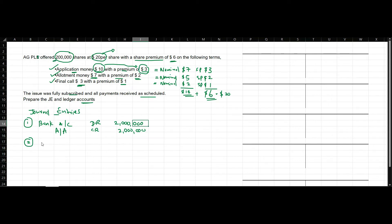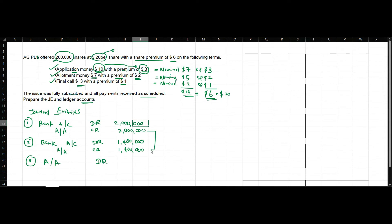Allotment money received is $7, so $7 times 200,000 shares equals $1.4 million. The bank account is debited with $1.4 million and the application and allotment account is credited with $1.4 million. At the time of allotting the shares, you must transfer the money received to the ordinary share capital account, so you debit the application and allotment account. The account now holds $2 million plus $1.4 million, totalling $3.4 million.